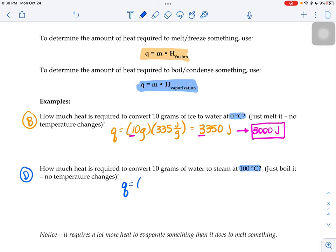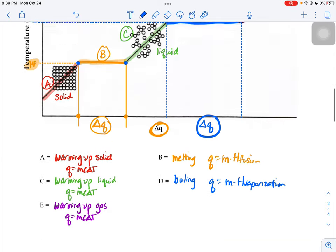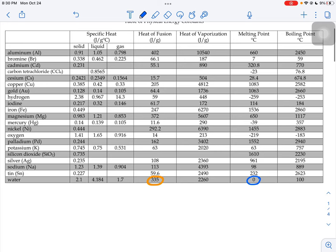So still 10 grams, but now we need water's heat of vaporization number. So we go to our chart. Here's the number right here, 2,260 joules per gram.